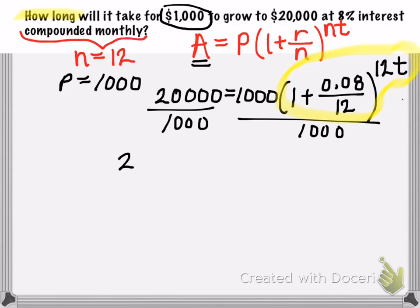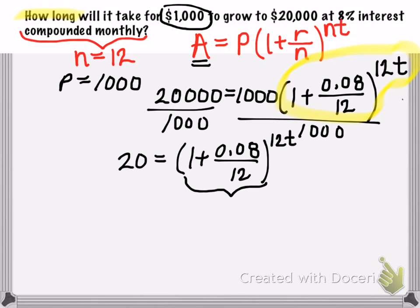So we'll end up with 20 is equal to the quantity 1 plus 0.08 divided by 12 raised to the 12t. Now we want to be as accurate as possible. So we should probably investigate with our calculator the value of 1 plus 0.08 divided by 12.